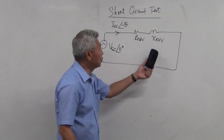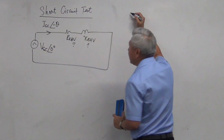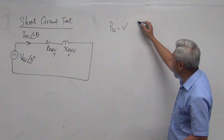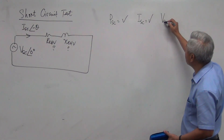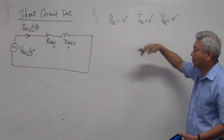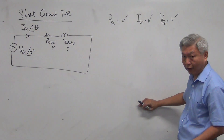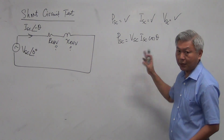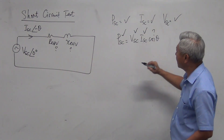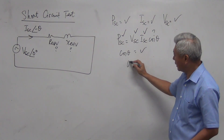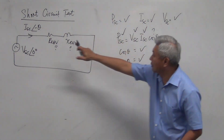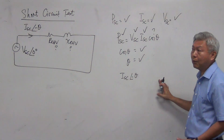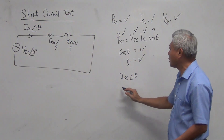Let us look at the mathematics and how to derive these two values. The three measuring instruments give us: the wattmeter to measure power PSC, the ammeter to measure short circuit current ISC, and the voltmeter to measure voltage VSC. We start with PSC = VSC × ISC × cos θ. You have PSC, VSC, and ISC, so cos θ can be found and then theta can be found by taking the inverse cosine.